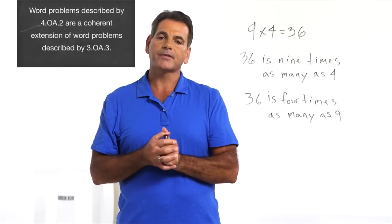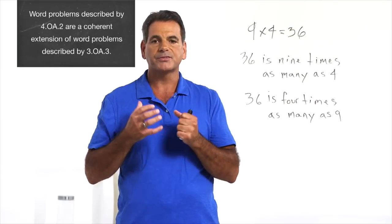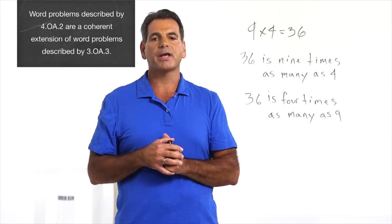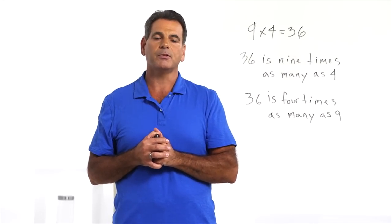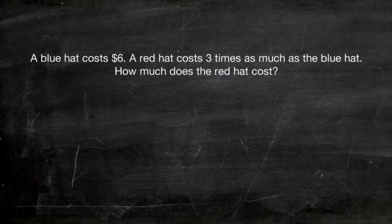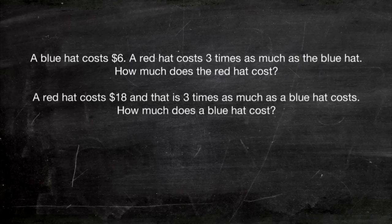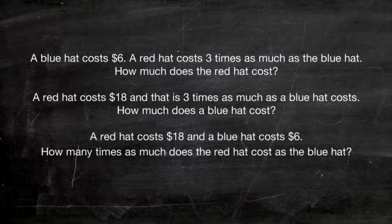Table 2 in the glossary at the end of the Common Core Standards document provides examples of the types of problems students in fourth grade need to be able to solve. Let's look at a couple of multiplicative comparison problems from that table. A blue hat costs $6. A red hat costs 3 times as much as the blue hat. How much does the red hat cost? A red hat costs $18 and that is 3 times as much as a blue hat costs. How much does a blue hat cost? A red hat costs $18 and a blue hat costs $6. How many times as much does the red hat cost as the blue hat?